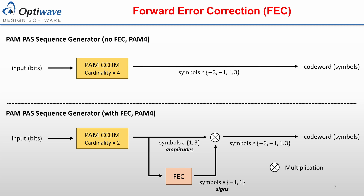Without FEC encoding, the CCDM encoder outputs all of the symbols within the PAM format — in PAM-4, these include negative 3, negative 1, 1, and 3. With FEC encoding, the CCDM encoder outputs only the positive symbols within the PAM sequence, which correspond with the amplitudes of the format. These symbols are copied to an FEC encoder system, which encodes them into a symbol sequence containing the symbols negative 1 and positive 1. This sequence corresponds with the sign information of the PAM format. The amplitude sequence from the CCDM encoder is then multiplied with the sign sequence from the FEC encoder to generate the full PAM sequence.